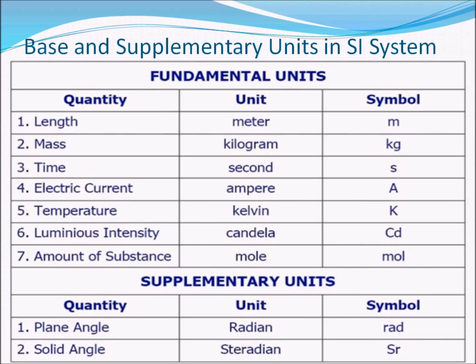Luminous intensity is the one unit you will not really deal with in 11th and 12th grade. It has to do with the way the eye perceives light, not light itself. For example, light of the same intensity in yellow versus red will appear brighter to us in yellow — that is what candela measures. Amount of substance is a macroscopic form of a molecule or atom — a collection of approximately 6 × 10²³ molecules or atoms, which is a very large number.